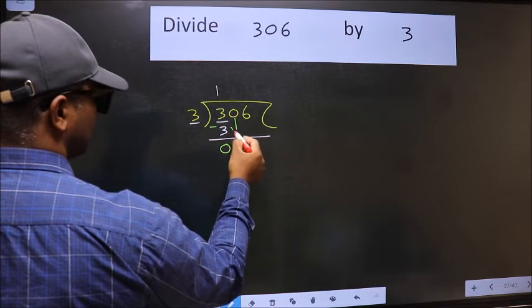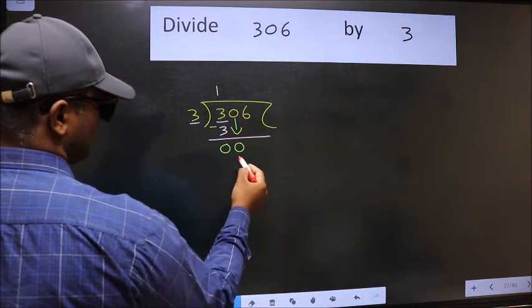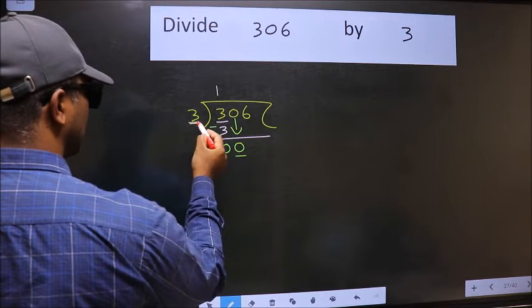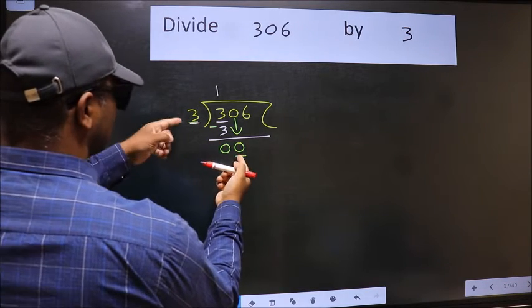After this, bring down the beside number. So, 0 down. Now here we have 0 and here 3. 0 is smaller than 3.